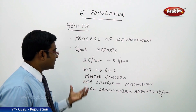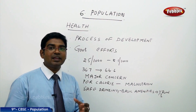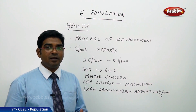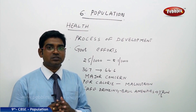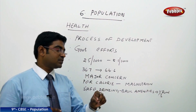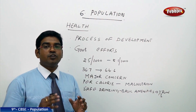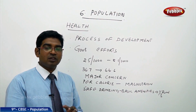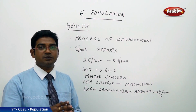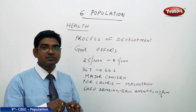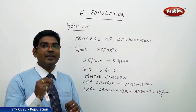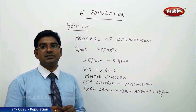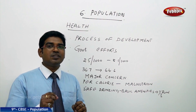Even though the government has achieved a lot and increased medical facilities — establishing many dispensaries and primary health care centers — health remains a major concern in India. Safe drinking water and basic sanitation are not available to more than two-thirds of the rural population. Per calorie consumption in India is still below the recommended rate, resulting in malnutrition. Only one-third of the rural population is able to access safe drinking water.